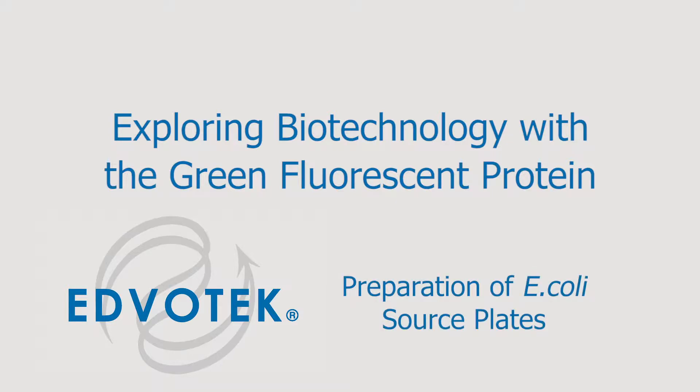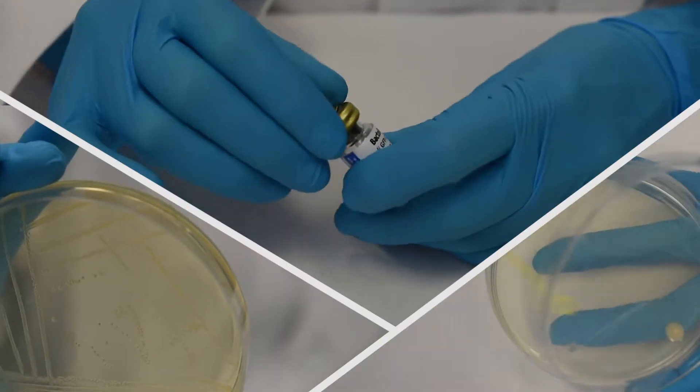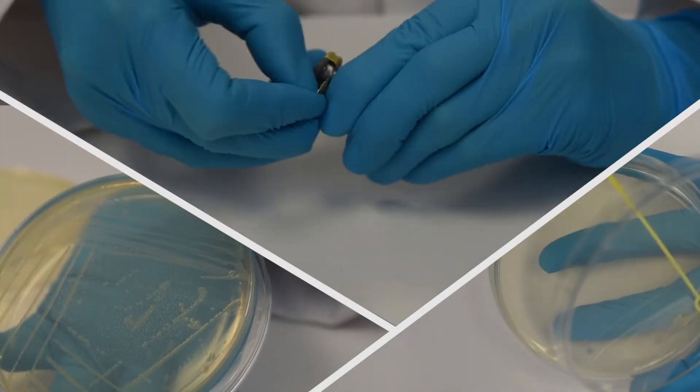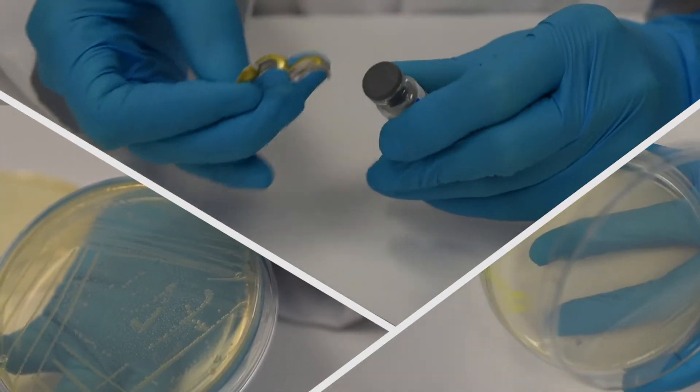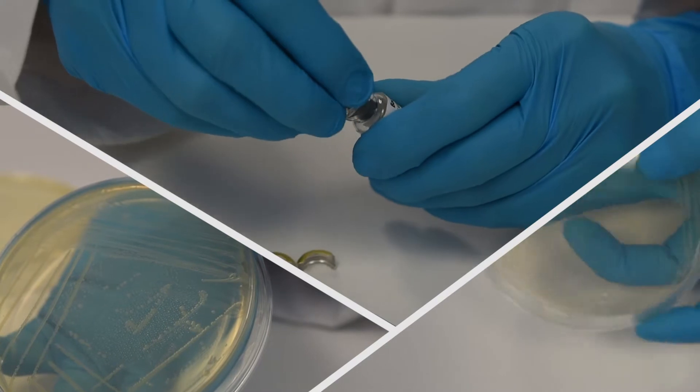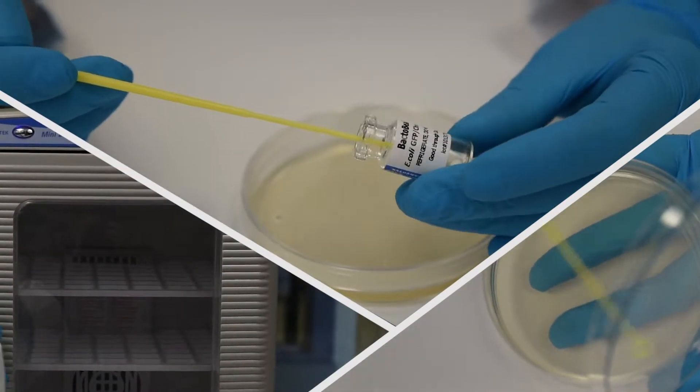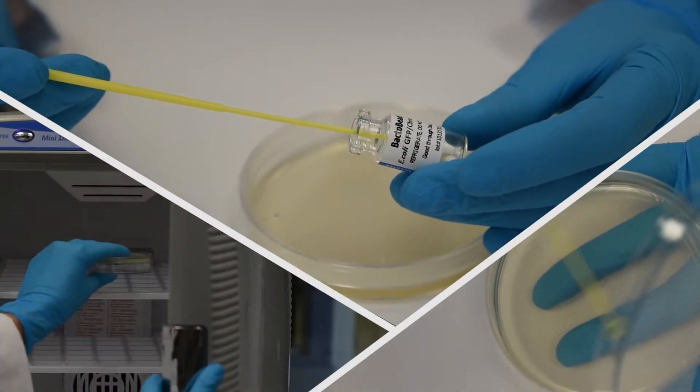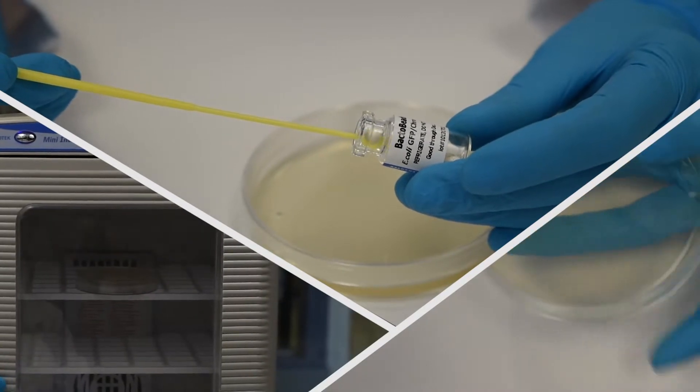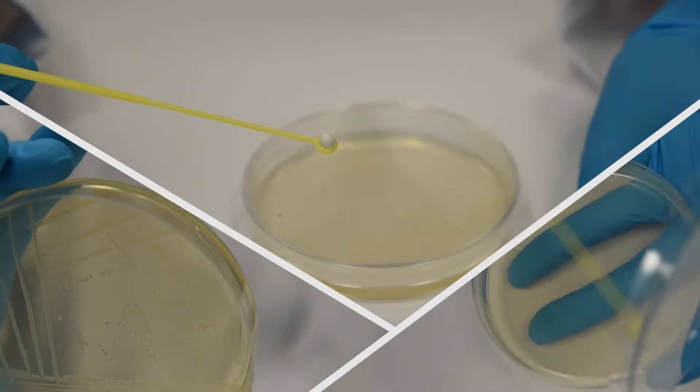Preparation of E. coli Source Plates. For best results, the E. coli source plates should be streaked 18 to 22 hours before the experiment is performed. Preparing the source plates more than 24 hours before the activity may compromise the success of the transformation experiment.